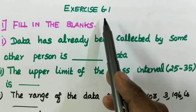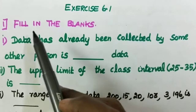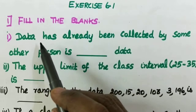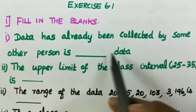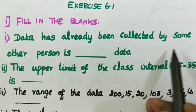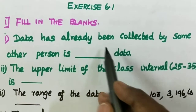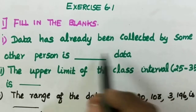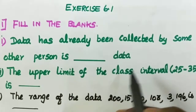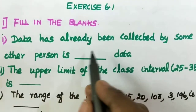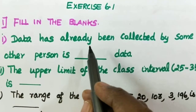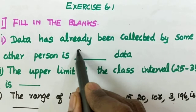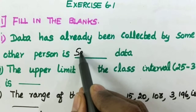Exercise 6.1, first question: fill in the blanks. Data that has already been collected by some other person is called secondary data.